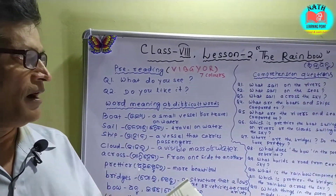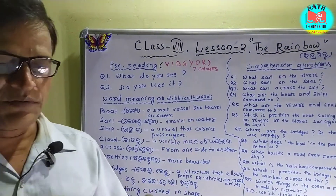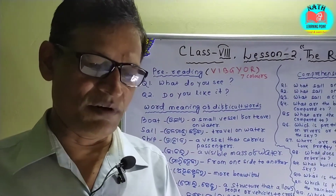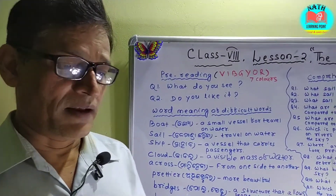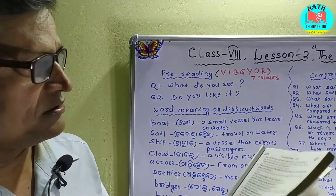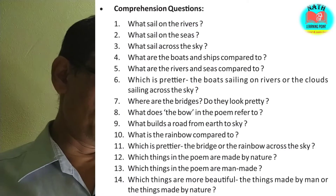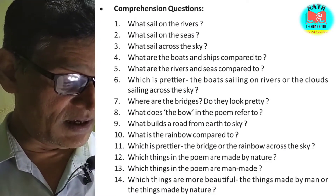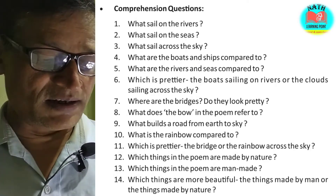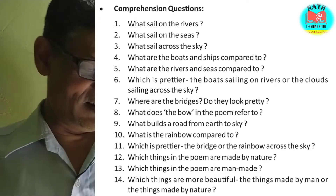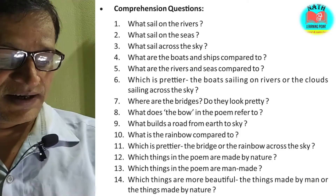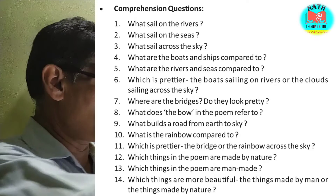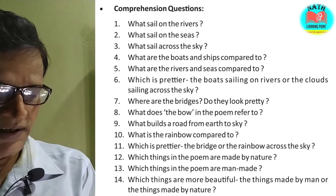Now I ask you some comprehension questions. How much do you understand this poem? First question: What sails on the rivers? Who can answer? Raise your hand. Boats sail on the rivers. Question number 2: What sails on the seas? Ships sail on the seas.